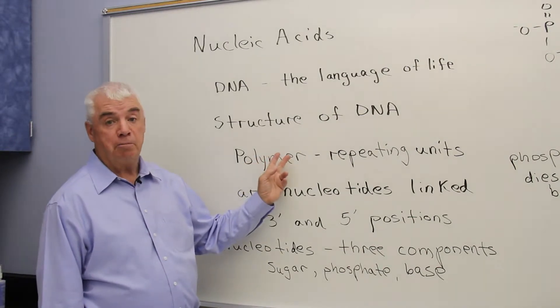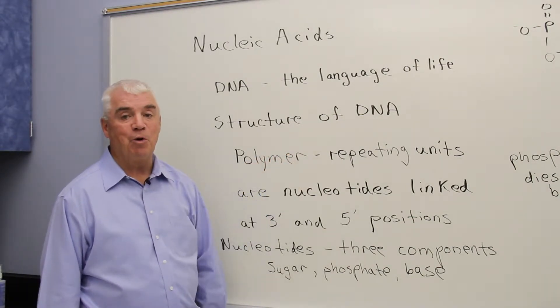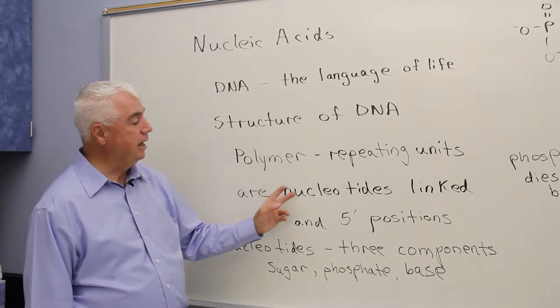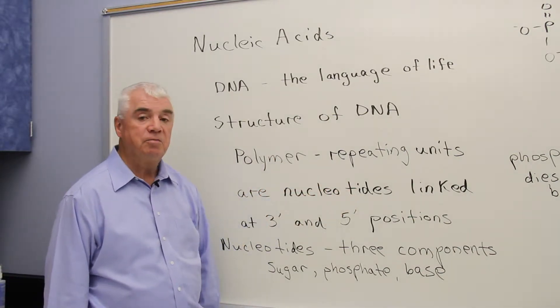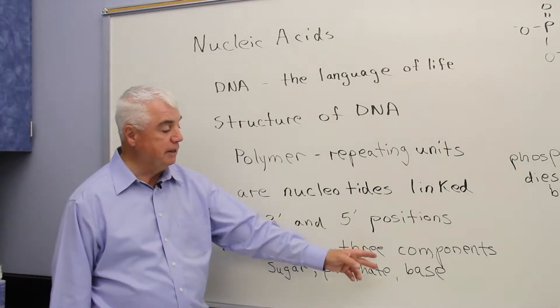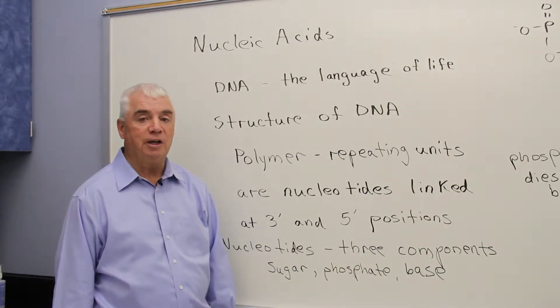Let's look at the structure of DNA. It's a polymer, like proteins and some carbohydrates. The repeating units in DNA are called nucleotides, and there are three components: a sugar, a phosphate, and a base in each nucleotide.